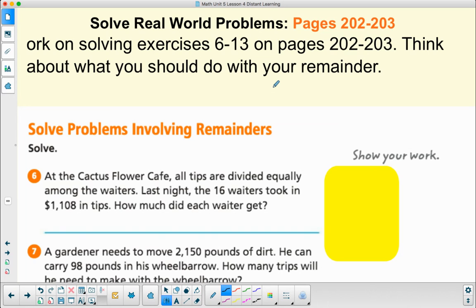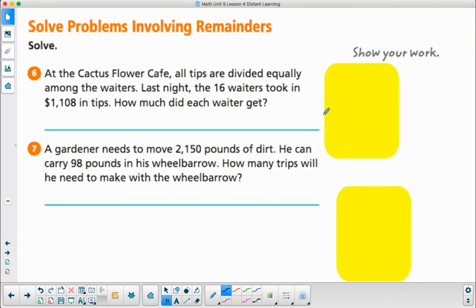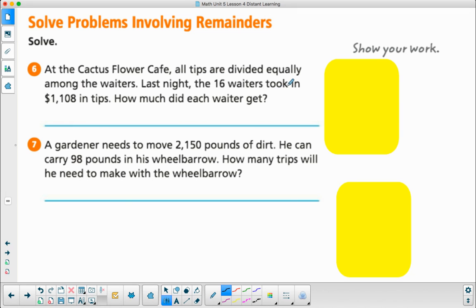Here are some more problems to try out for real world situations. Go ahead and think of all the different things you can do with remainders. Check back in the video if you need some help with it. As soon as you're done, you can see my answers. You have number 6: At the Cactus Flower Cafe, all tips are divided equally among the waiters. Last night the 16 waiters took in $1,108 in tips. How much did each waiter get? And number 7: A gardener needs to move 2,150 pounds of dirt. He can carry 98 pounds in his wheelbarrow. How many trips will he need to make?